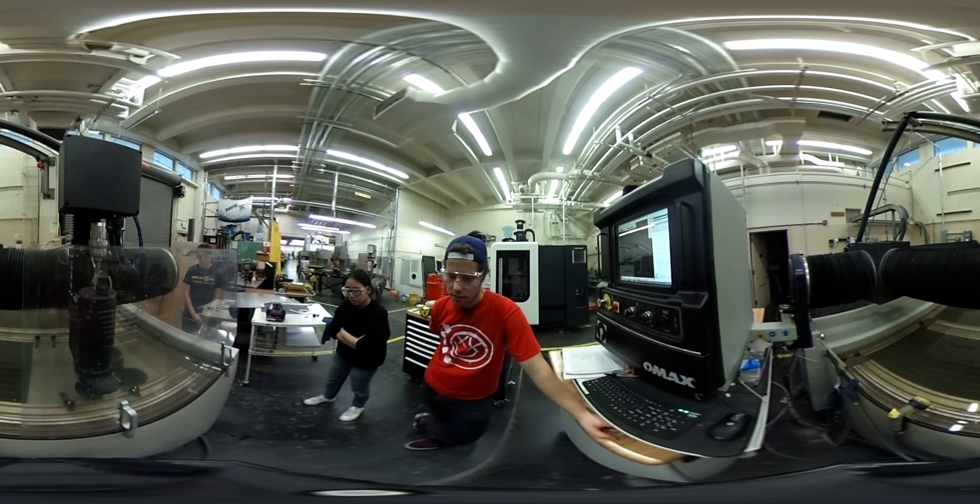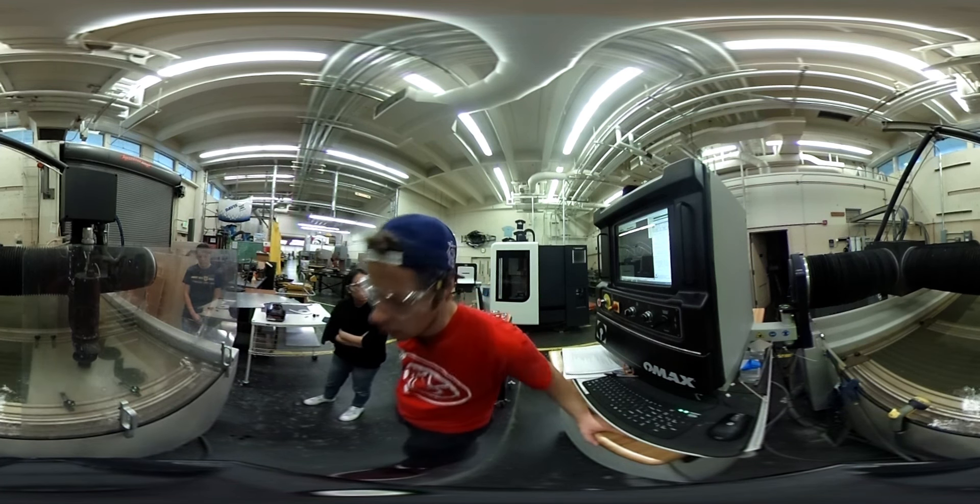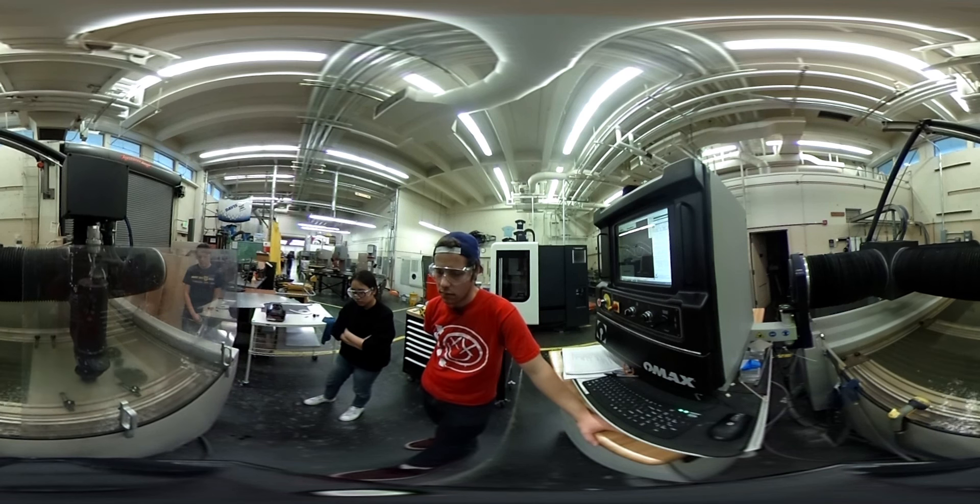The way it works is it shoots pressurized water through a diamond nozzle. Right now we have 0.035 inch thick aluminum on the machine.